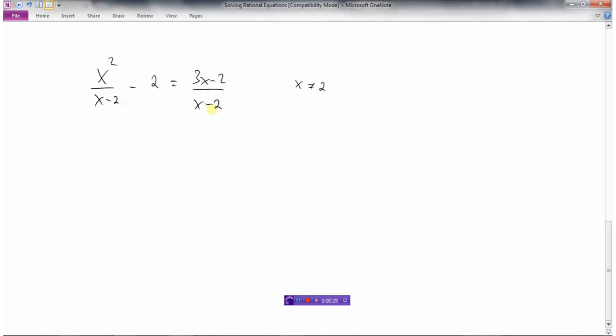2 minus 2 would be a problem. Can't divide by 0. So my non-permissible value is 2. x cannot be 2. So now I'm going to solve this equation for x.